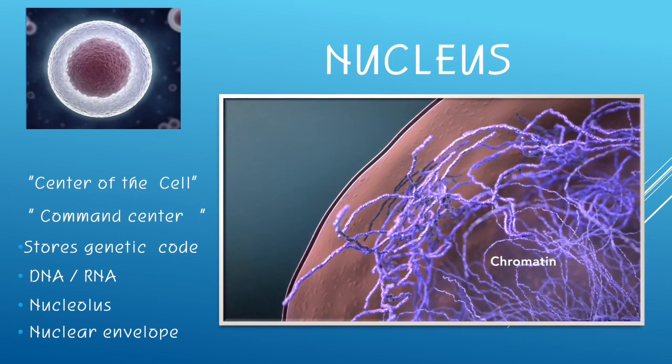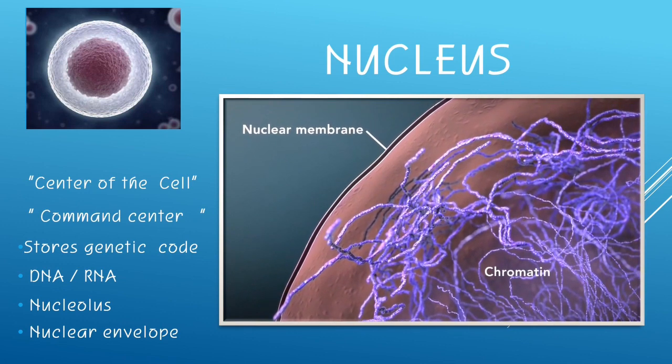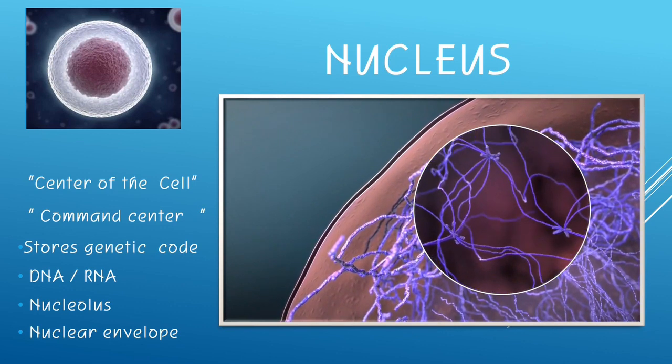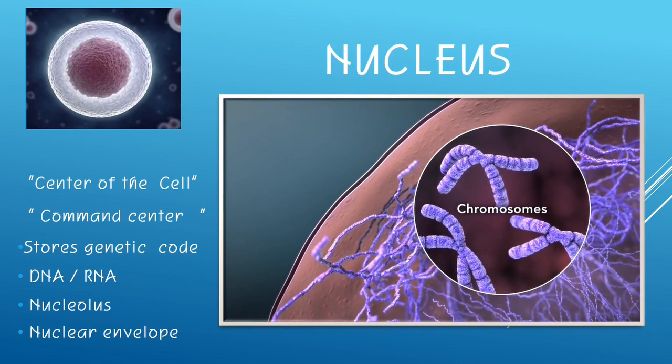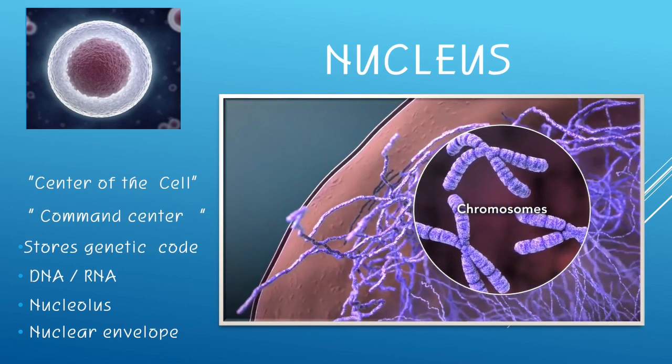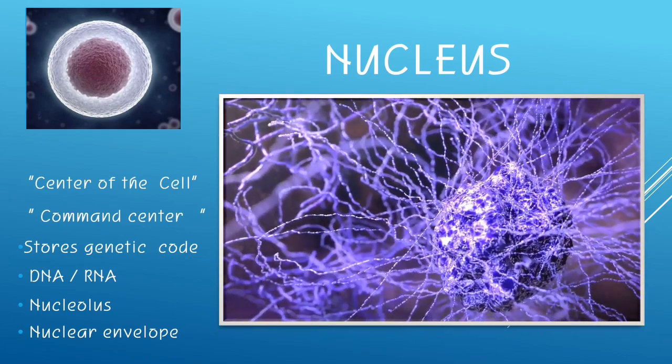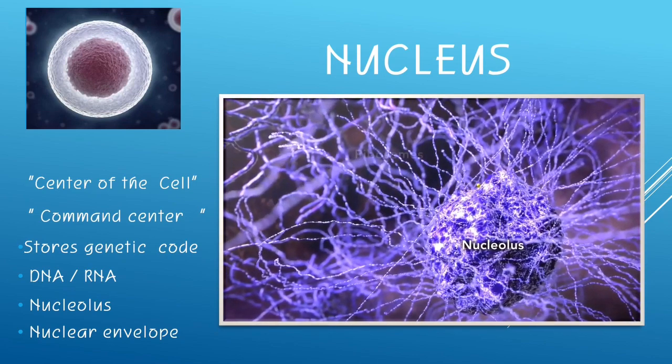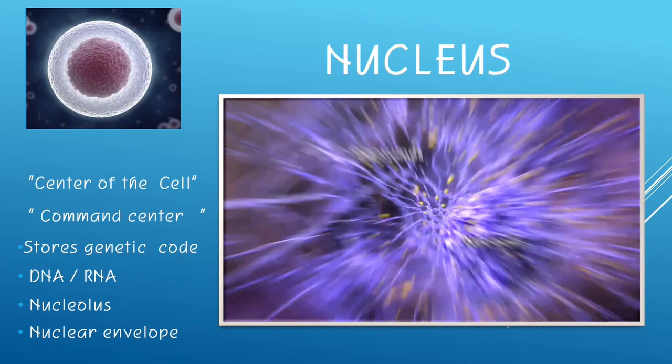Nucleus chromatin, it is the tangled or the spread out form of the DNA that can be found inside the nuclear membrane. During mitosis or meiosis, the DNA condenses and it forms a structure called chromosomes. Nucleus also contains the structure called nucleolus. This is where the ribosomes are being made.